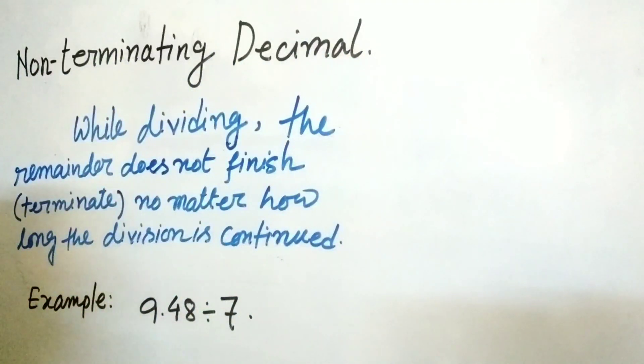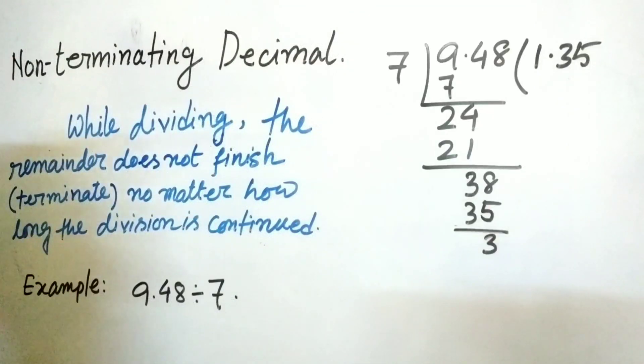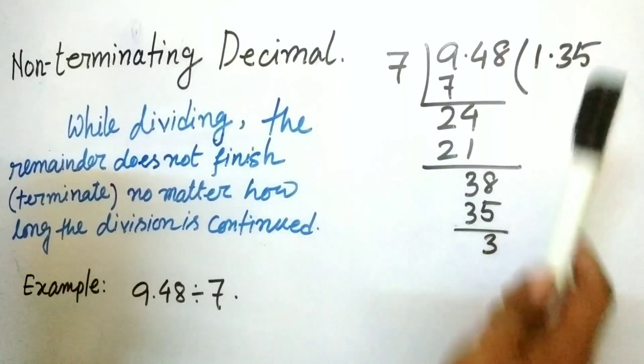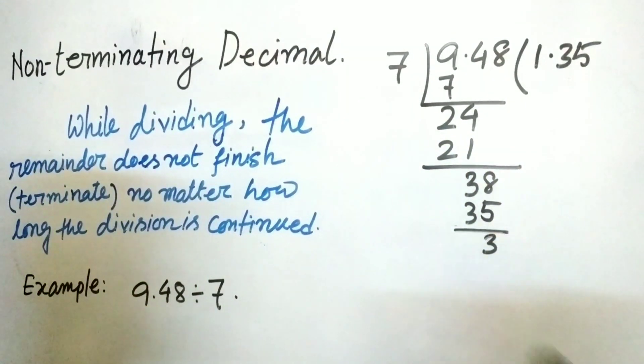Non-terminating decimal: While dividing, the remainder does not finish or terminate no matter how long the division is continued. That means if you start dividing this number, for example 9.48 by 7, we will not finish it by dividing. The remainder will be continued. After dividing 9.48 by 7, we have got 1.35 in quotient and 3 in remainder.